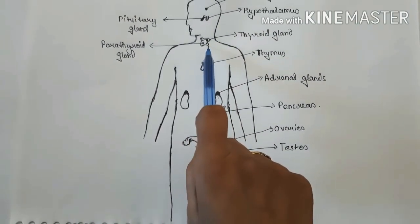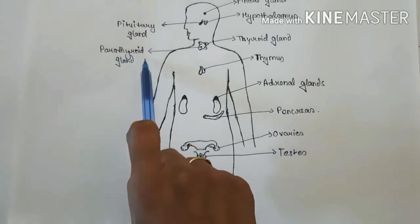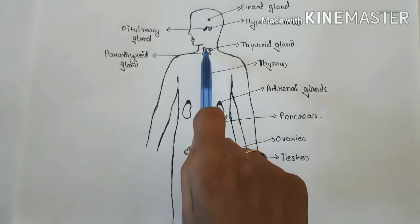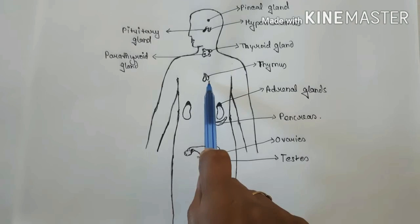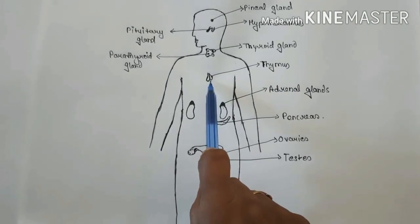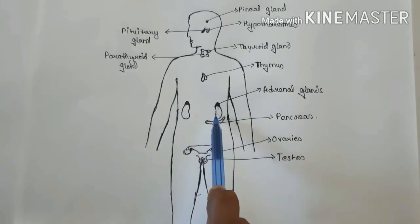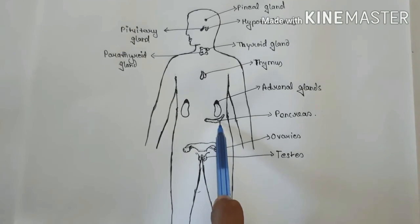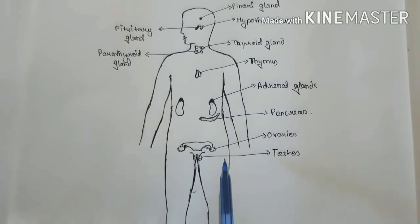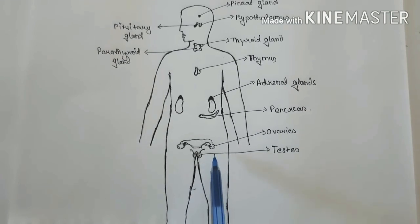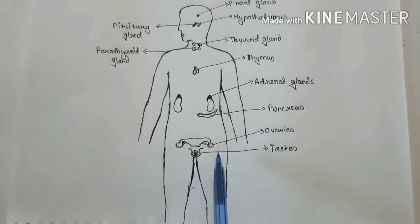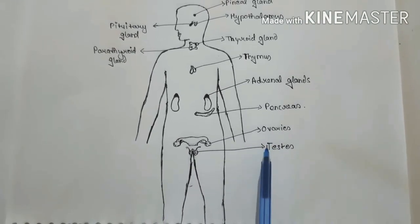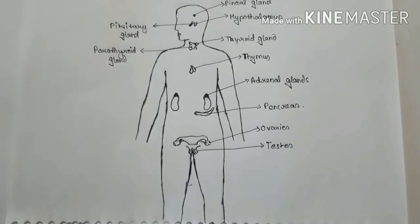The thyroid gland is present in the neck, and the parathyroid glands are present on the posterior part of the thyroid gland — there are four parathyroid glands. The thymus is present in the chest region. The adrenal glands are present on the upper side of both kidneys. The pancreas is present below the stomach. The gonads — meaning ovaries and testes — produce gametes as well as hormones.